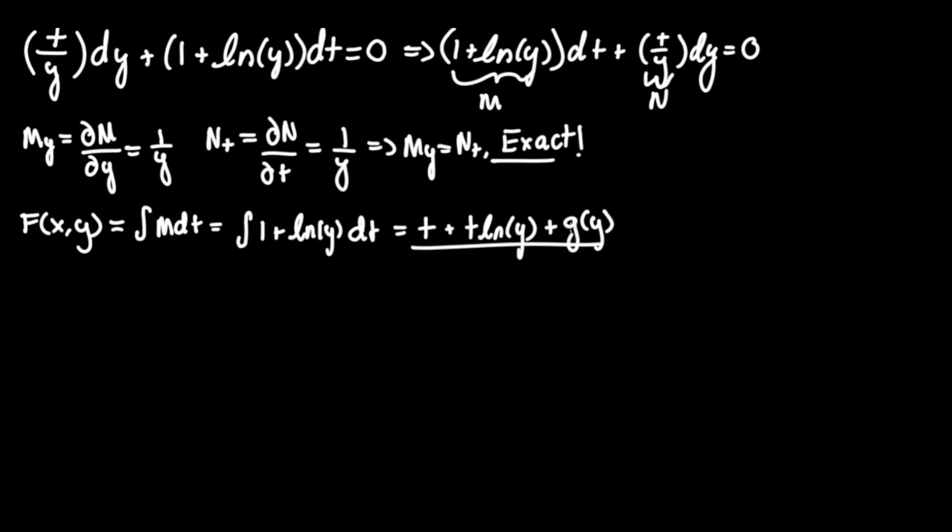But we still need to find g of y. To do that we need to take the partial derivative of the parent function f with respect to the other dependent variable y. This equals the derivative of t with respect to y is just zero since t is a constant and again here t is a constant however ln y the derivative of that as we found out before is 1 over y and remember you're multiplying by the constant t so it's t over y plus g prime of y.